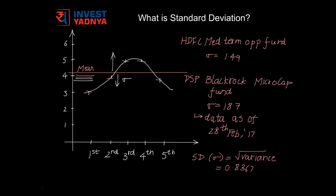Blue-chip funds, debt funds, etc., would have a lower Standard Deviation, while mid-cap and small-cap funds would have higher Standard Deviation. Like in the example that you see in front of you, HDFC Medium-Term Opportunities Fund, which is a debt fund, has a Standard Deviation of 1.49, whereas DSP BlackRock Microcap Fund, which is a small-cap equity fund, has a Standard Deviation of 18.7. The data has been taken as of 28th February 2017.